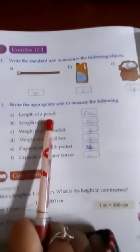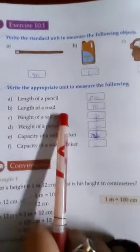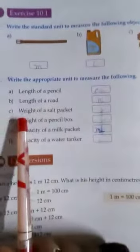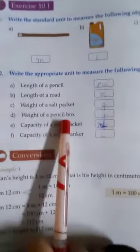The second question is write the appropriate unit of measuring the following. First is length of pencil that you can measure in meter or centimeter. Length of a rod will be in meters. Weight of salt packet will be in grams. Weight of pencil box will be in grams.